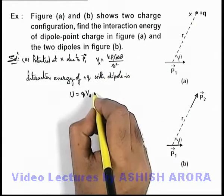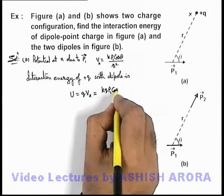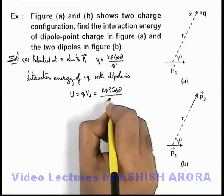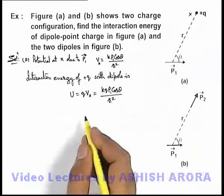If we substitute the value of Vx here: k q p1 cos theta by r squared, that will be the interaction energy of this dipole and the point charge +q.